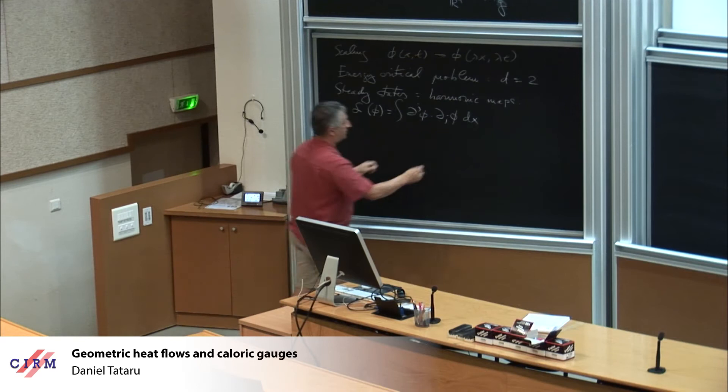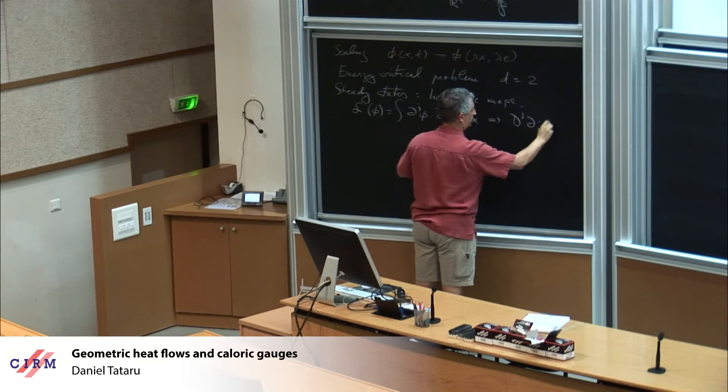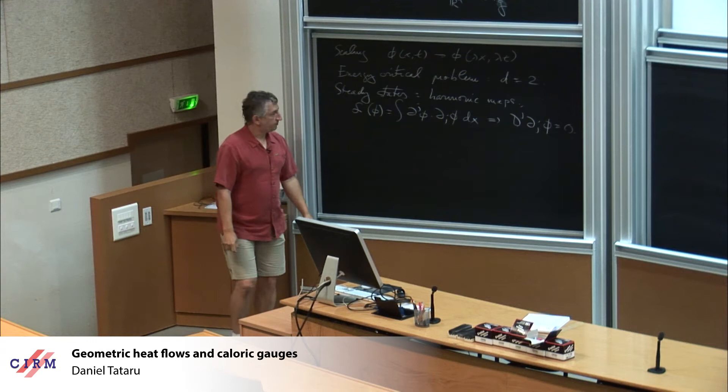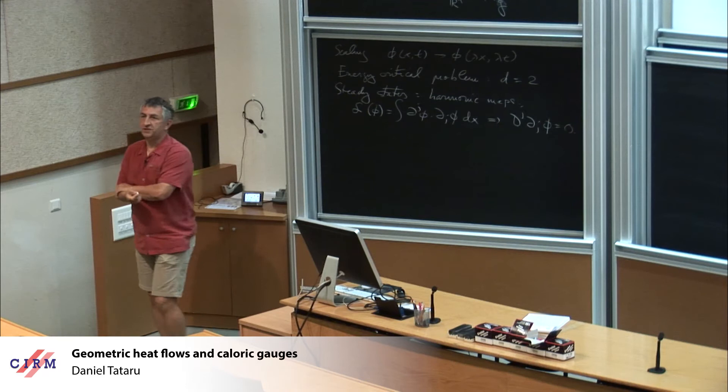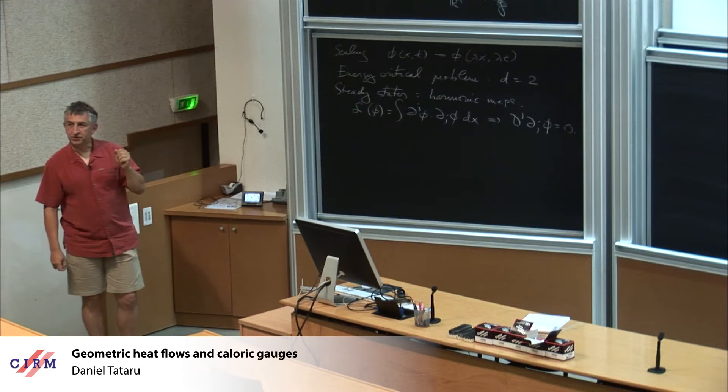The equation that you get here is simply D_j D_j phi equals zero, which is a second-order elliptic equation. And so, the question is whether you have such steady states. The question of whether you have such steady states seems to be tied to a little bit of topology.